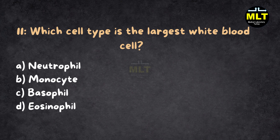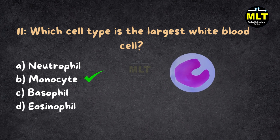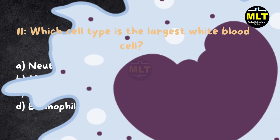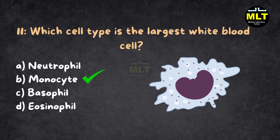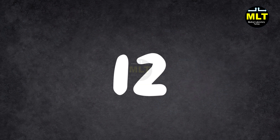Correct answer: B. Monocyte. Explanation: Monocytes are the largest WBCs and transform into macrophages to phagocytose pathogens and debris.